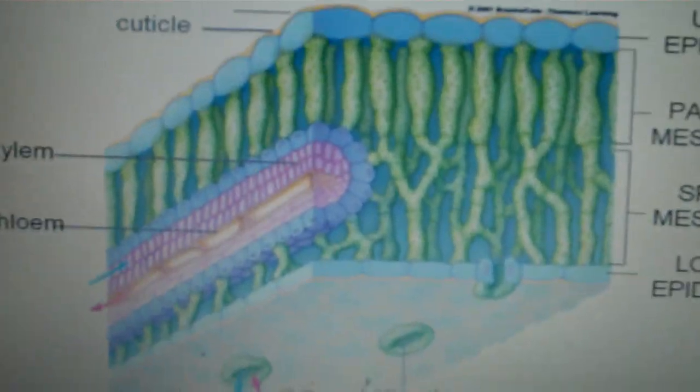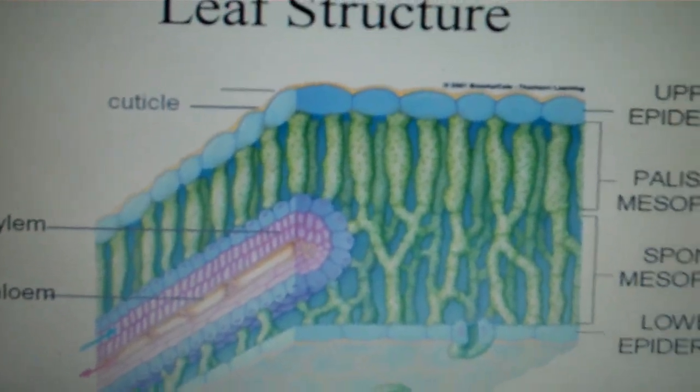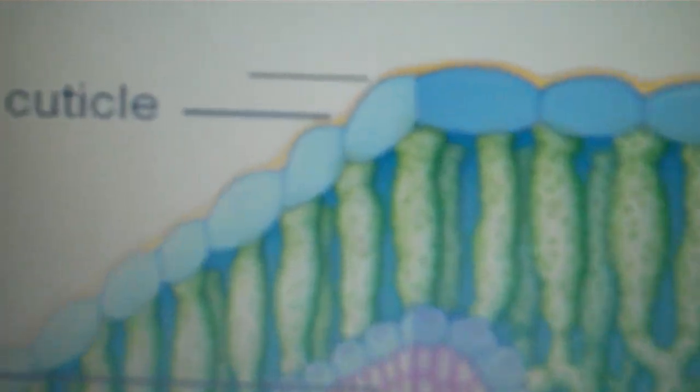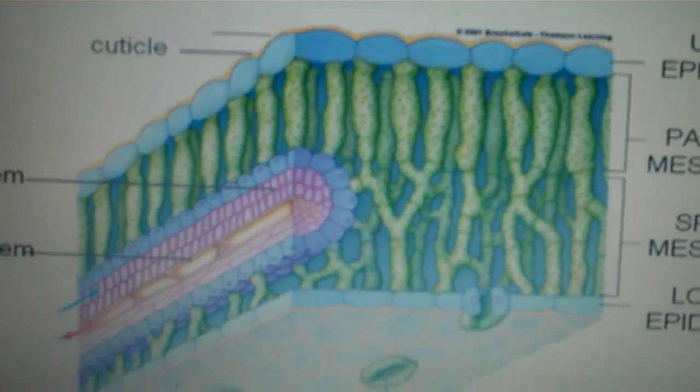Now leaf structure. A leaf consists of three tissues. We have the dermal tissue, the epidermis in blue. The cuticle would be here in a yellowish color on the surface, the waxy cuticle. Then we have the dermal tissue.